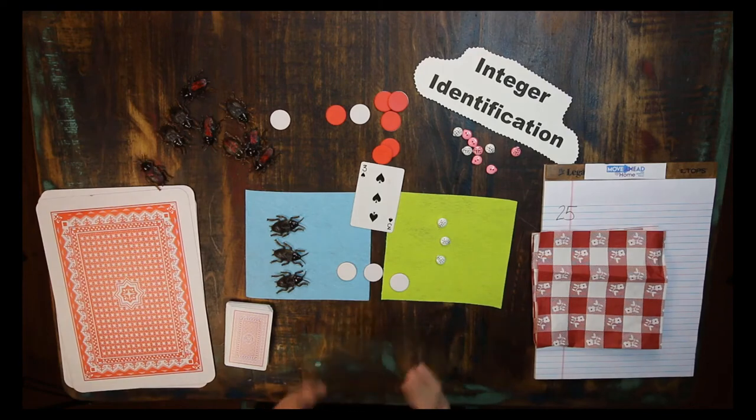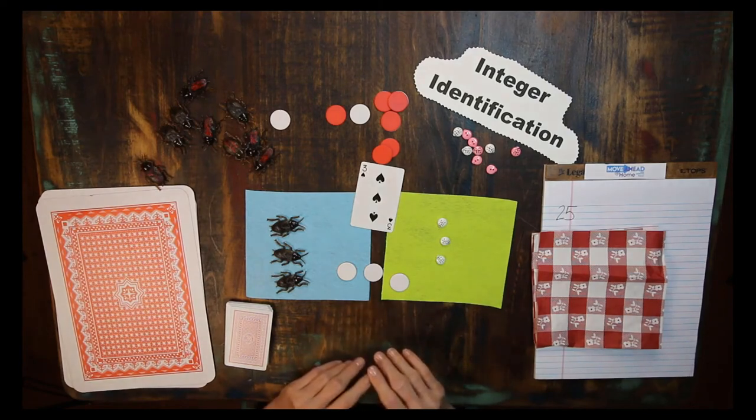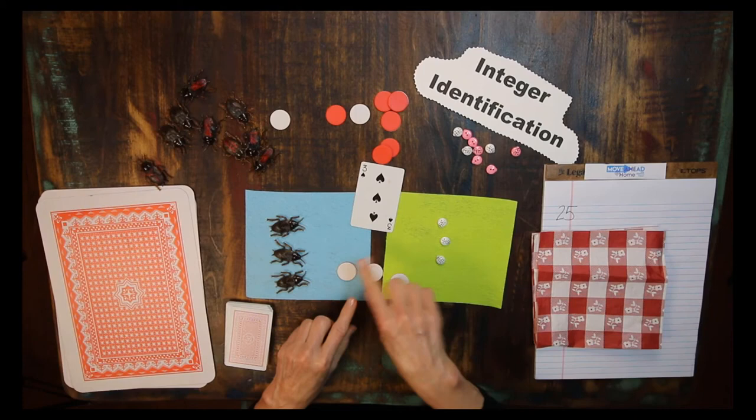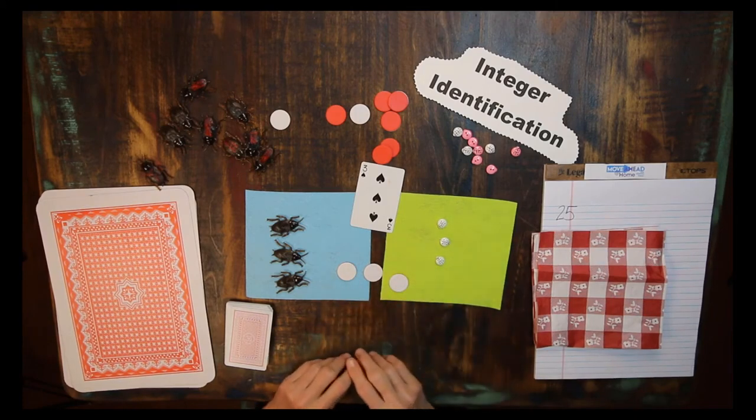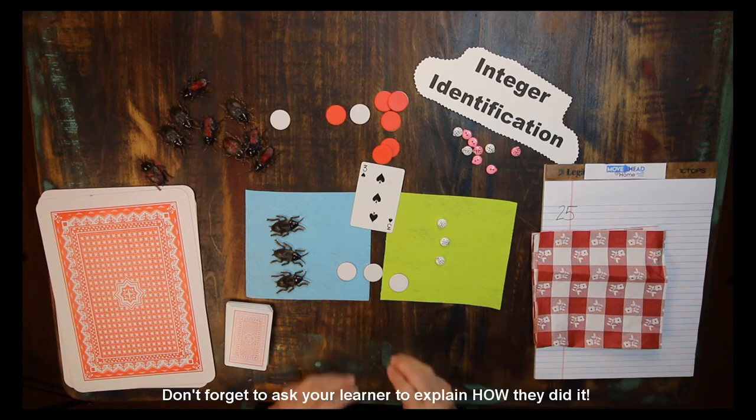Wait a second. If you've watched other Move Ahead at Home videos you know that a player can't win a card or a point unless they can explain how they know they have the correct answer and they support it.